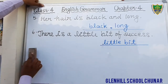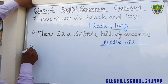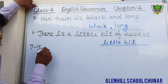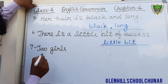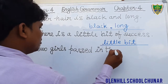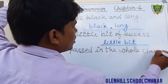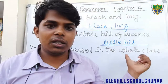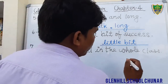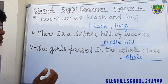Question number 7: Two girls passed in the whole class. Here, the word 'whole' is the adjective — it is a quantitative adjective. So you will write the word 'whole' in the blank for question number 7.